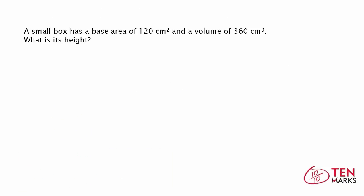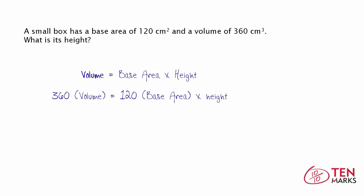In some situations, you're actually going to know the volume and you'll be asked to find a missing dimension. Let's look at this question. A small box has a base area of 120 square centimeters and a volume of 360 cubic centimeters. What is its height? Keep in mind: volume equals base area times height. Plug in the numbers that you do know — 360 for volume and 120 for base area — and here's the missing dimension we're looking for: height.